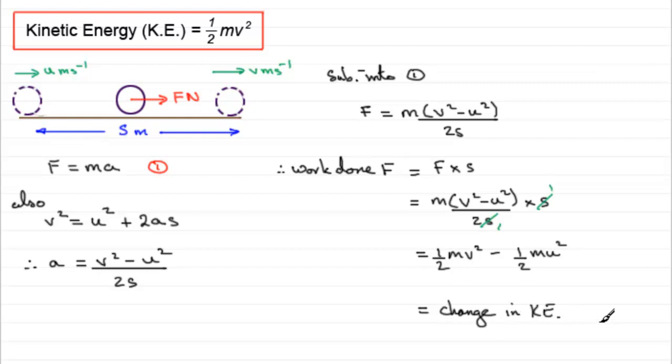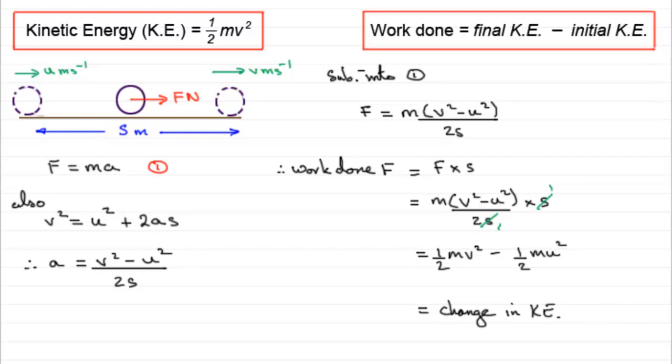So what we have then is this result: work done equals the final kinetic energy minus the initial kinetic energy. In other words, the change in kinetic energy.